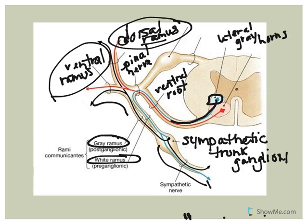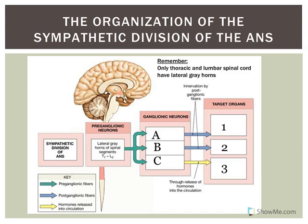To summarize: cell bodies of pre-ganglionic neurons for the sympathetic nervous system are located in the lateral gray horns of spinal cord segments T1 to L2 - hence the name thoracolumbar division. Those axons are relatively short and lightly myelinated. They're going to synapse with cell bodies of post-ganglionic neurons located in various ganglia, and we have three different options.